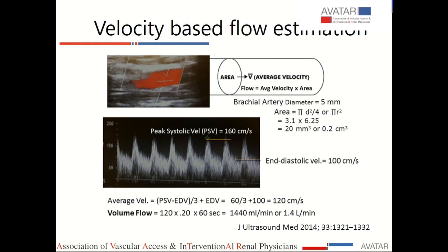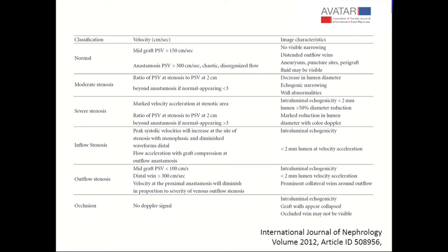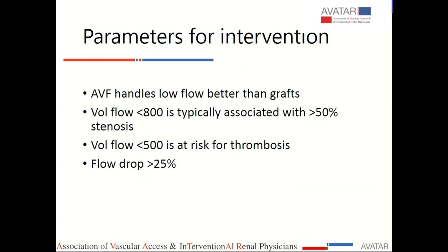We are going to skip the velocity-based flow detail here — there is a good article from 2012 which highlights various ultrasound parameters for making the diagnosis and interpretation using ultrasound. After doing an ultrasound study, if you're going to follow a certain parameter, follow it on a regular basis. If volume flow is less than 500 ml/min, those are the ones at risk for thrombosis. If flow drops by more than 25% between two studies and your studies are accurate, those are the access at high risk for thrombosis and which need further intervention.